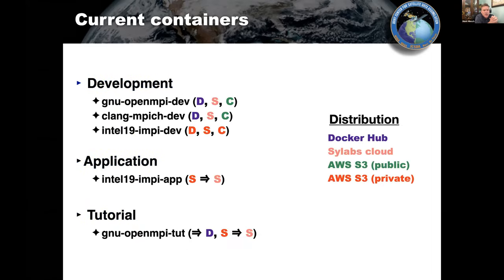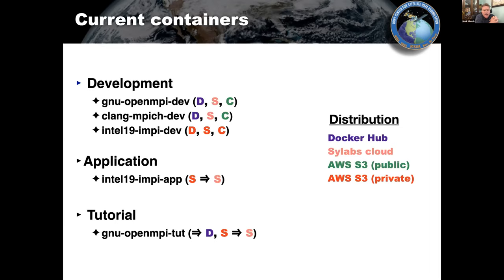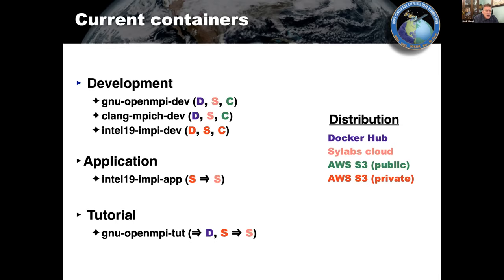Currently we define containers by the combination of compiler and MPI. We have GNU/OpenMPI, Clang/MPICH, and Intel 19 containers that we maintain. The public development containers are distributed on Docker Hub and the Sylabs cloud Singularity site. Charliecloud containers are made publicly available on AWS via wget. The Intel development container is privately on AWS — you need a JCSDA account. The Intel application container is currently private on AWS because the JEDI code is not public yet, but as soon as we have our public release, we'll make that public.